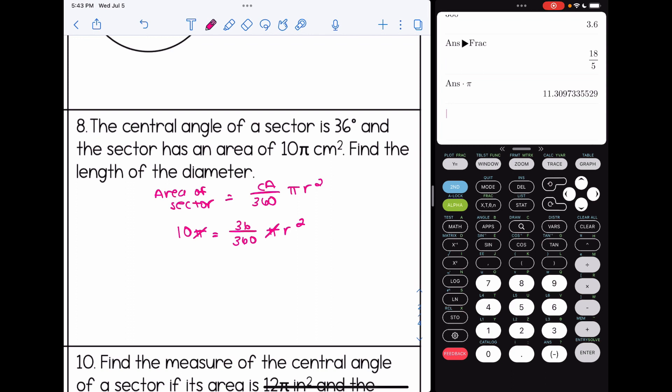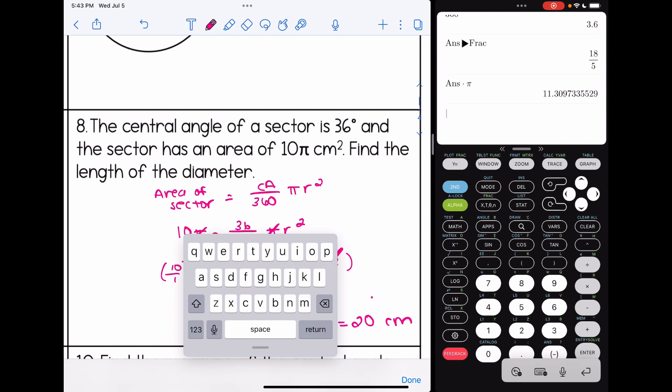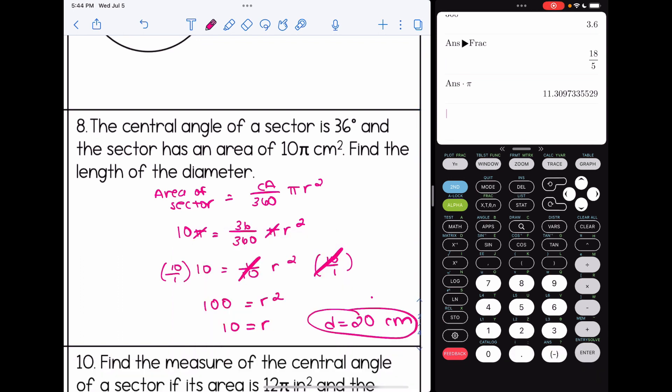Now if you want to simplify the 36 over 360, that is up to you. You might feel comfortable for the algebra portion looking at it and saying, oh, 36 over 360 is the same as 1/10th. But if you want to leave it that way, it is not necessary to reduce it. But I'll do it here just to look at some smaller numbers. To solve for r, I'm going to multiply both sides by the reciprocal. That's going to give me 100 equals r squared. That means my radius is 10. So the diameter in this case is going to be double that. So 20.